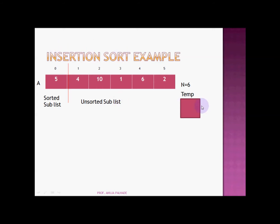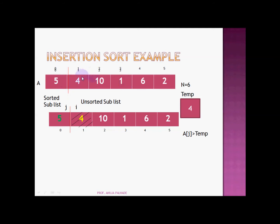To start the insertion sort I have taken a temp variable. The number we pick from the unsorted sublist is first put into temp, and then we choose the appropriate place by comparing or shifting within the sorted sublist. We move two loops: the first loop (I) is for picking the item from the unsorted sublist, and the second loop (J) is for putting the temp item into the correct position in the sorted sublist.